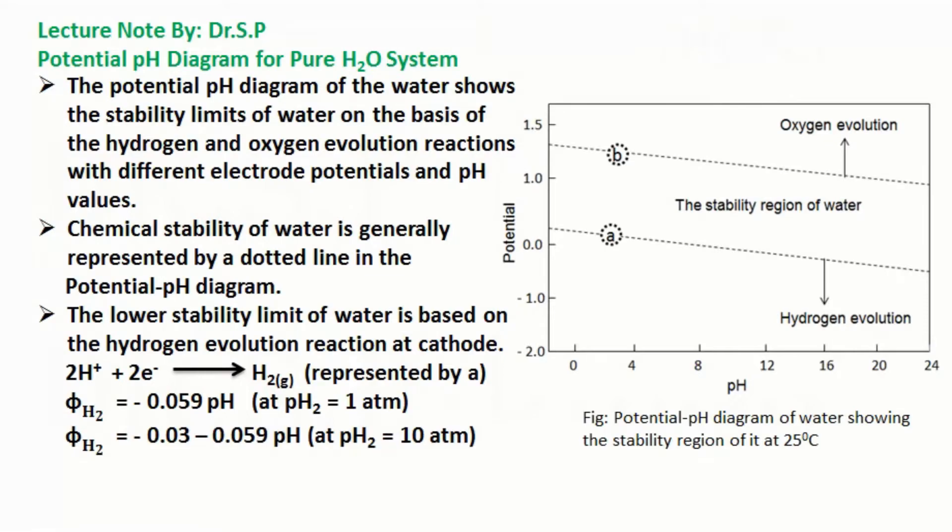The reduction half cell potential for hydrogen is minus 0.059 times pH at 1 atmospheric pressure and minus 0.03 minus 0.059 times pH at 10 atmospheric pressure.